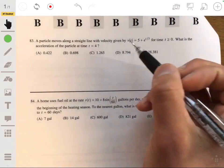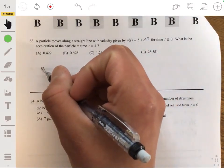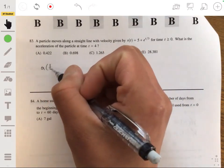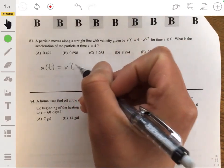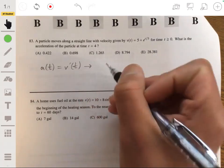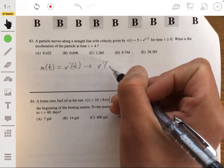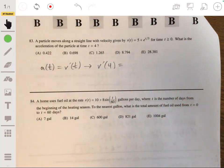Okay, so acceleration is simply the derivative of velocity. So we simply just have to find the derivative of velocity at t equals 4. So we just want to find v prime of 4. And for that, we just can evaluate and plug it into your calculator.